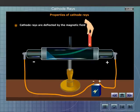Cathode rays are deflected by the magnetic field. When the tube is exposed to a magnetic field, the cathode rays follow a curved path showing that they are deflected by the magnetic field.